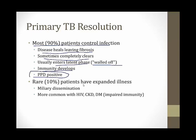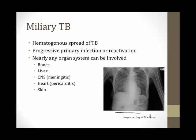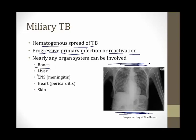Rarely, a small minority of patients develop expanded illness beyond the lungs — called miliary dissemination. This occurs most commonly in immunocompromised patients: HIV patients, those with chronic kidney disease or diabetes. Miliary TB gets its name from the classic chest X-ray appearance — small white opacities in both lung fields resembling millet seeds. This represents hematogenous spread of the mycobacteria, and nearly any organ system can be involved: bones, liver, CNS causing meningitis, heart causing pericarditis, and skin.